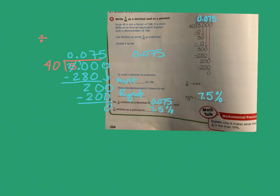To summarize: if you have a fraction whose denominator can easily become 100, use equivalent fractions. If not, divide the numerator by the denominator to get the decimal, then move the decimal two spots to the right to get the percent. That's how we do it.